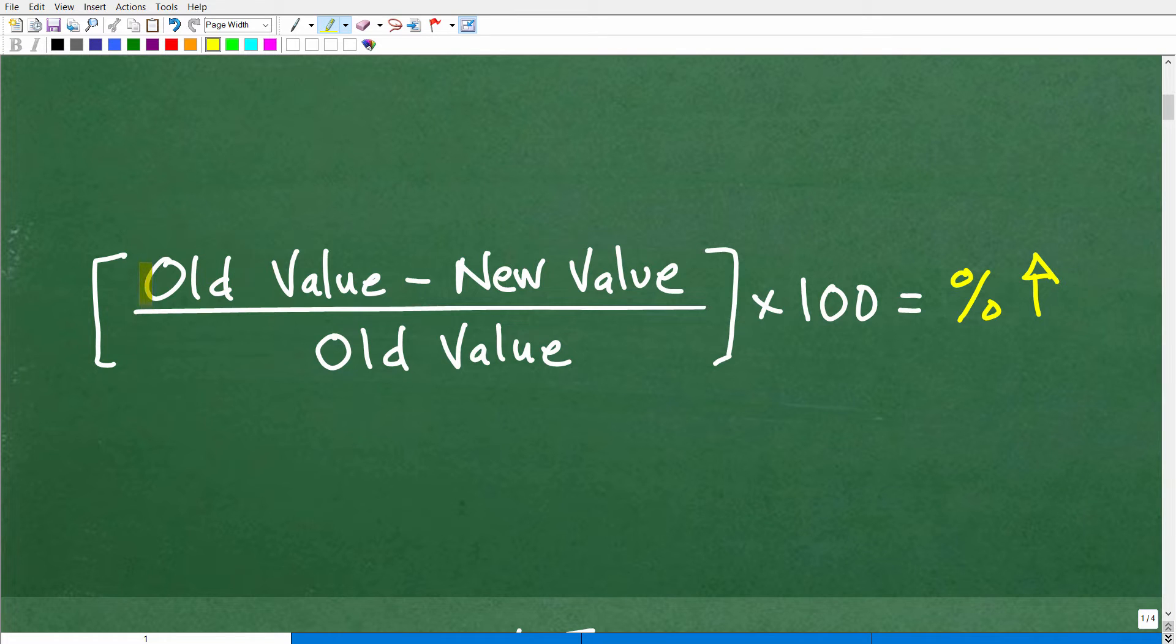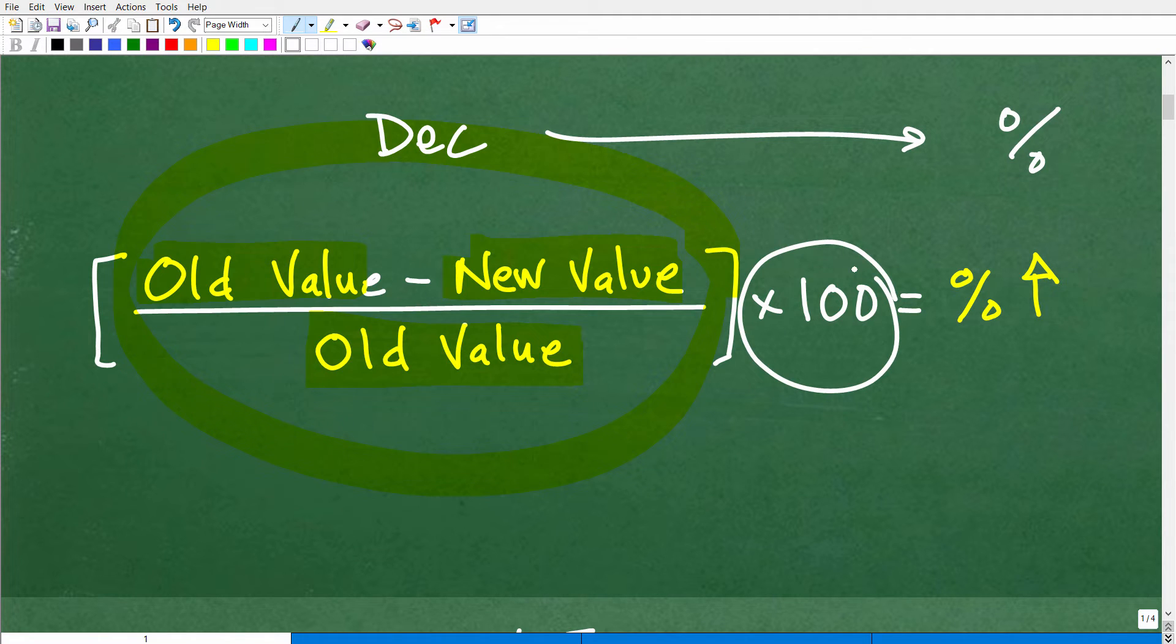All right, so let's go ahead and give you a nice little formula. Here it is: basically you want to take the old value and you want to subtract away the new value, and then we'll divide it by the old value. We're going to get some sort of decimal when we do this. Now when we have this decimal value, to go from a decimal to a percent, we need to multiply by 100.